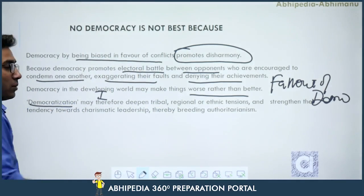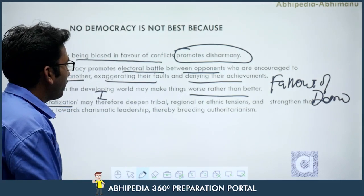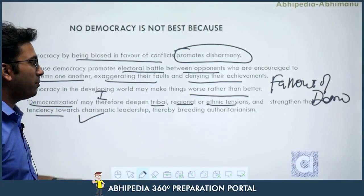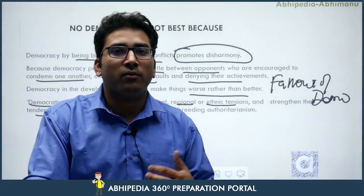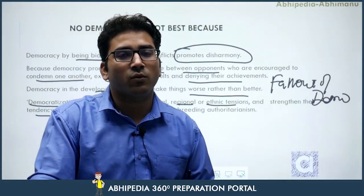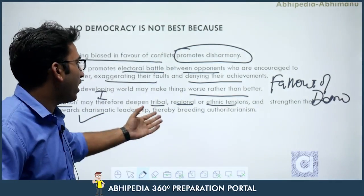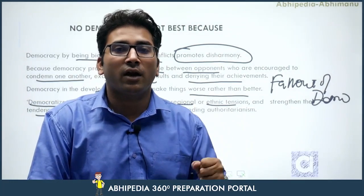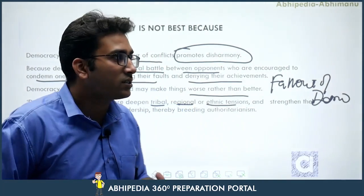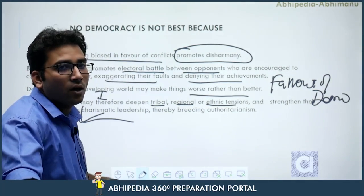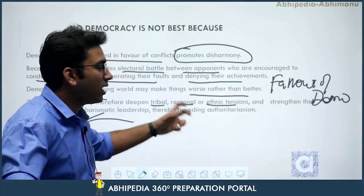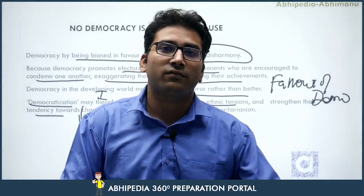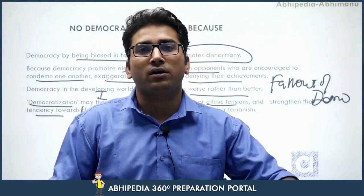Democratization — the process of establishing democracy — may deepen tribal, regional, and ethnic tensions and strengthen the tendency towards charismatic leadership, thereby breeding authoritarianism. We have seen in many developing countries that regional patriotism sometimes dominates over national patriotism, hurting the unity, integrity, and sovereignty of the country. Sometimes a charismatic leader tries to dominate so extensively that it establishes authoritarianism over democracy — a major threat whether in a developed or developing country.